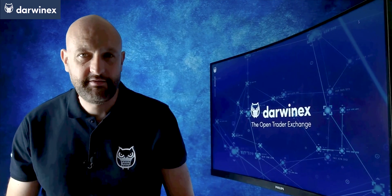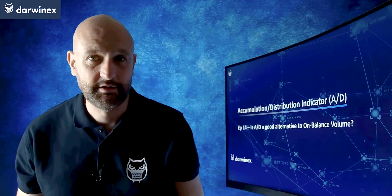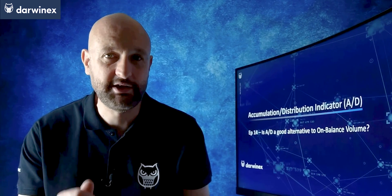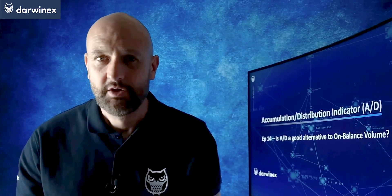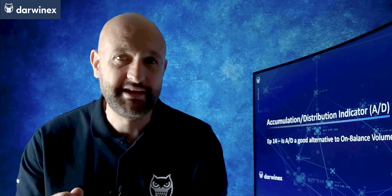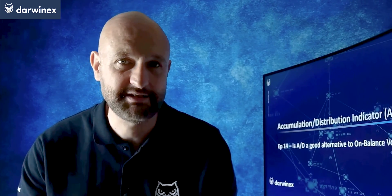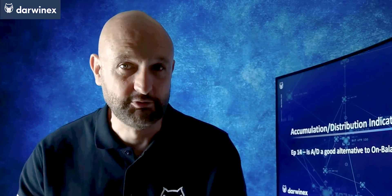Following our analysis of the on-balance volume indicator, I now turn my attention to a similar but subtly different indicator called accumulation distribution. This indicator uses a calculation that possibly represents the reality of the interaction between volume and price action in a better way than on-balance volume does. So does this make it a better predictor of what price action will do next?